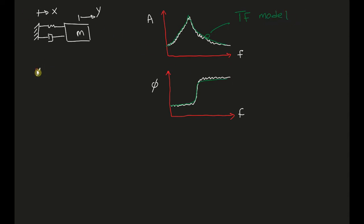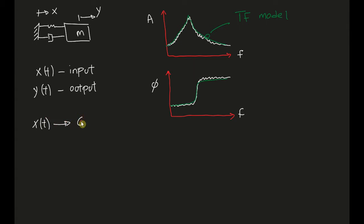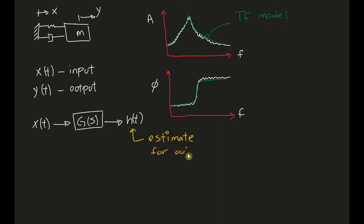The transfer function model has x(t) as input and y(t) as output. The idea is to create an approximate transfer function G(s), whose estimated output we call h(t). We want to iteratively improve this transfer function until the estimated output matches the actual output to a certain extent.